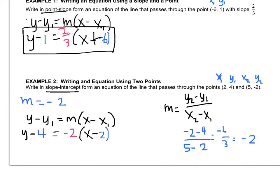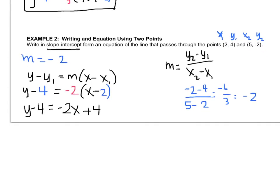So now I have to distribute from chapter 1, remember distributing. So I get y minus 4 equals negative 2x plus 4. Last step, drop a line, add 4 to both sides. Y equals negative 2x plus 8.